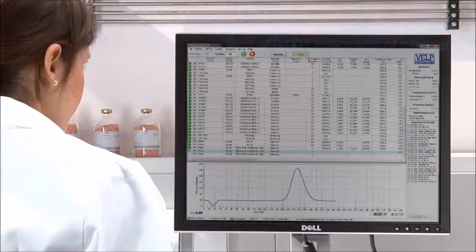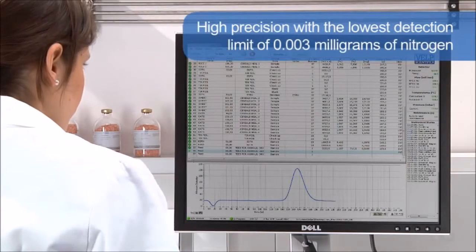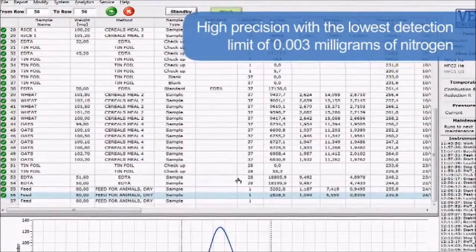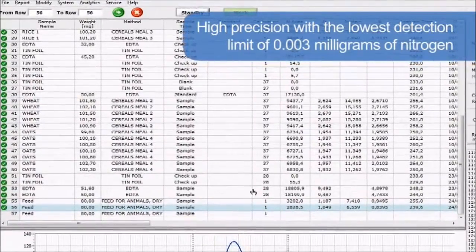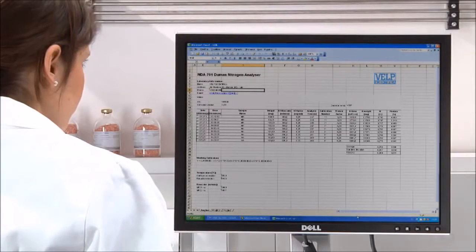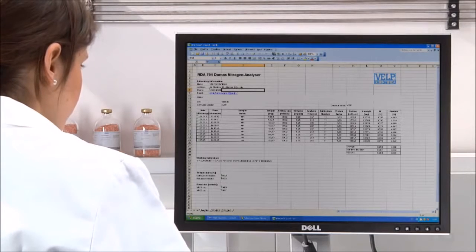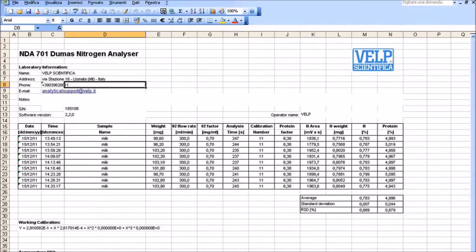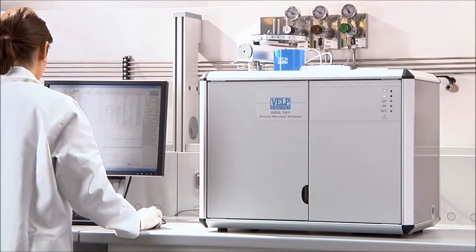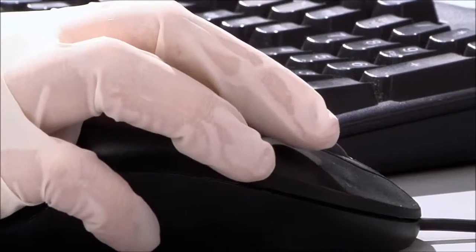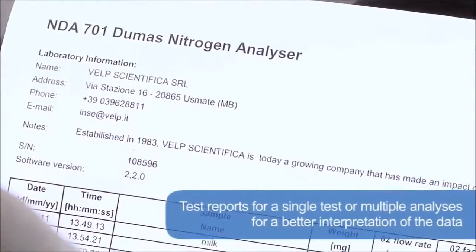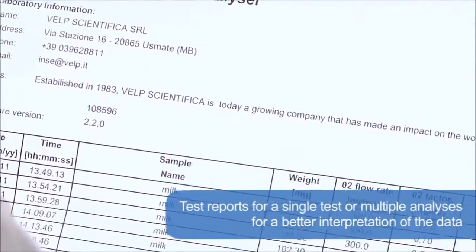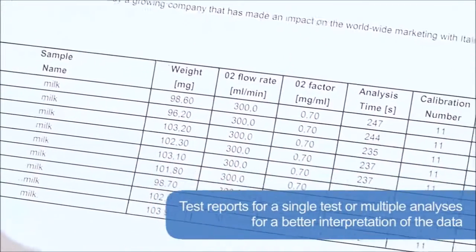The NGA701 provides the highest precision of any such analyzer on the market, with the lowest detection limit of 0.003 milligrams of nitrogen. A versatile reporting system can be configured to suit the user's preferences, and data can be output in XLS, TXT and CSV formats for compatibility with LIMS and the company's standard software. The operator can also create test reports for a single test or multiple analyses for better interpretation of the data. All results and reports can be output to a printer or saved for GLP compliance.